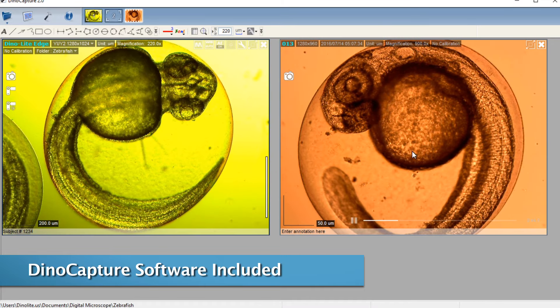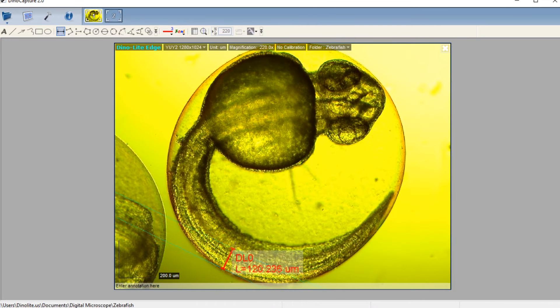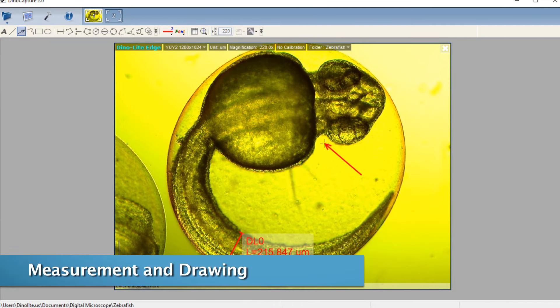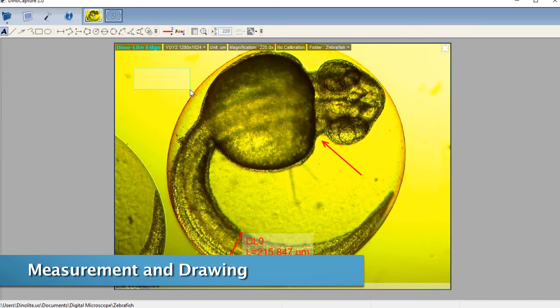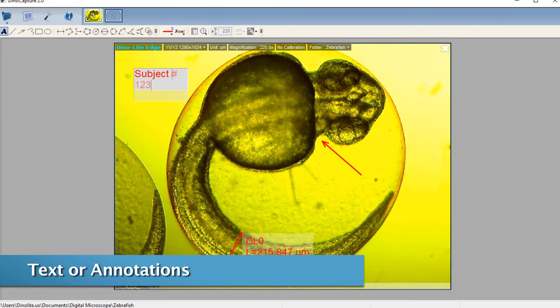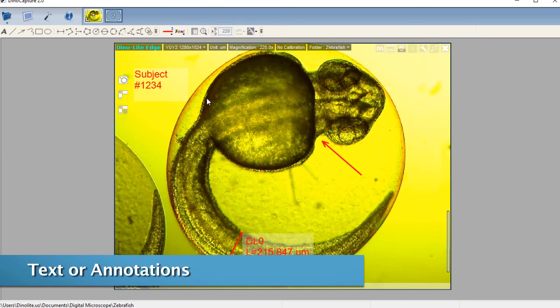The Dynolite includes easy-to-use software that has many basic and advanced features, including measurement tools for the previously mentioned models, as well as other drawing and text tools that can be used to label images and annotations.